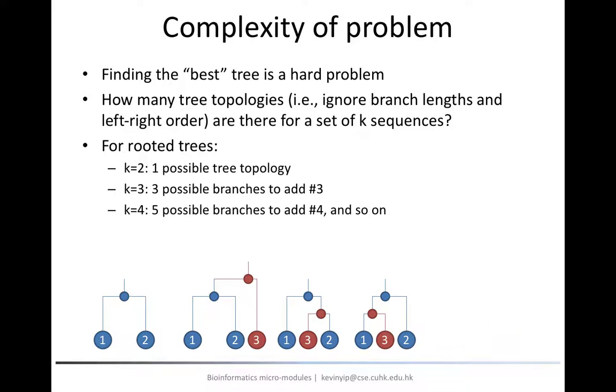Since there are three tree topologies for the first three sequences, there are in total 3 times 5, that is 15 different tree topologies, that can be formed when the input contains four sequences.